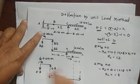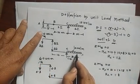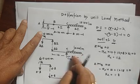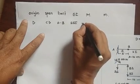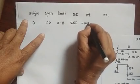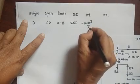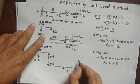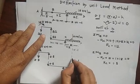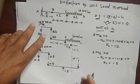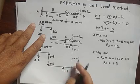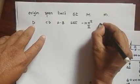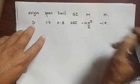The bending moment equation for section CD: the distributed load creates a hogging bending moment, so M = minus 10x²/2. For the unit load m, the unit force creates a hogging bending moment, so m = minus x.